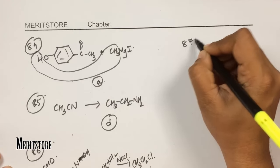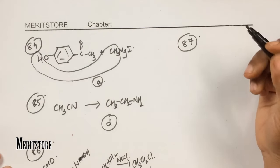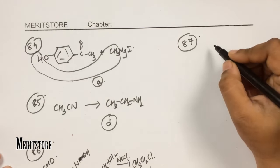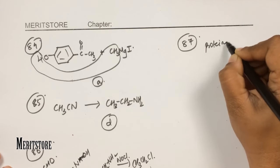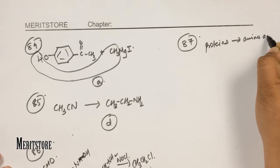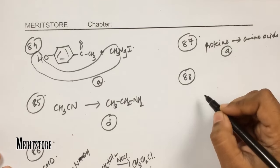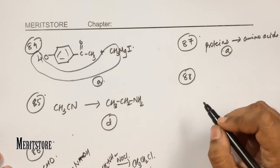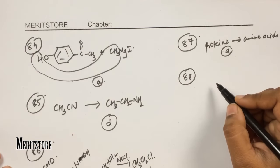Question number 87: the enzyme pepsin hydrolyzes proteins by cleaving amino acid linkages, converting proteins to amino acids. Therefore option A.